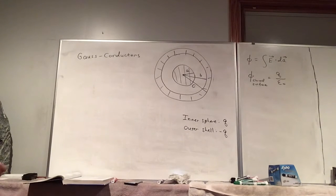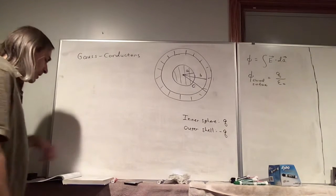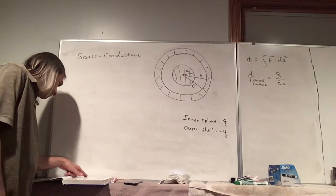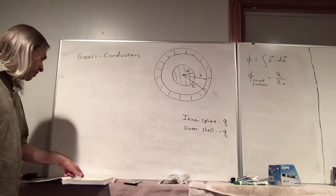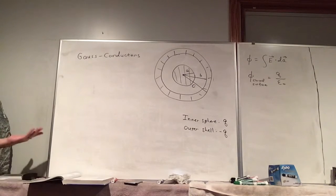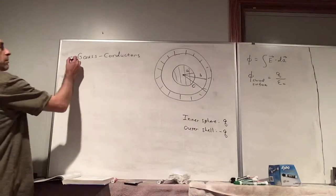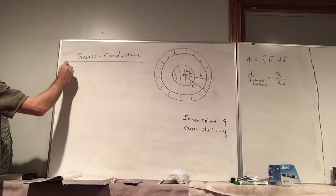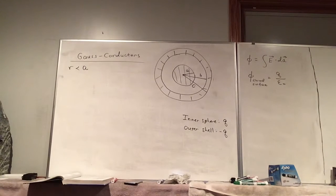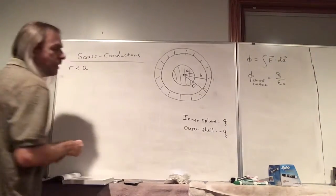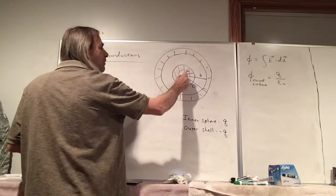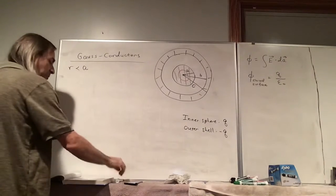It's a static situation, so we know that the electric field inside a conductor is zero. This will be a little bit easier than the homework problem. We want to find the electric field at locations within the sphere, between the sphere and the shell, inside the shell — basically the electric field everywhere. Let's look at the four regions. For R less than A, we can draw a Gaussian sphere centered at the center of our conductor.